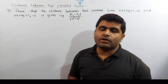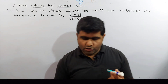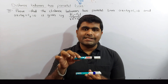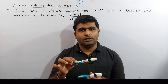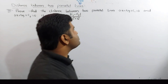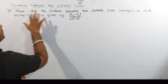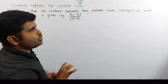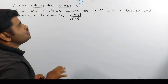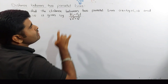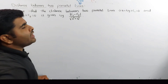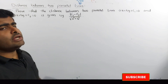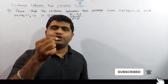Today I am going to check the theorem. Suppose we have two parallel lines. We need to prove that the distance between two parallel lines — ax + by + c1 = 0 and ax + by + c2 = 0 — is given by |c1 − c2| divided by the square root of a² + b².